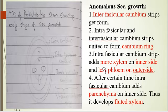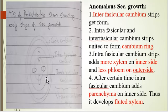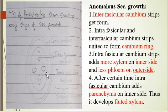This is the figure of the early stage of secondary growth observed in Aristolochia. In the early stage, intrafascicular cambium strips are formed. Intrafascicular means within the vascular bundle, between the xylem and phloem. In between the two vascular bundles, interfascicular cambium strips develop. These intrafascicular and interfascicular cambiums unite and form a cambium ring — the vascular cambium ring.